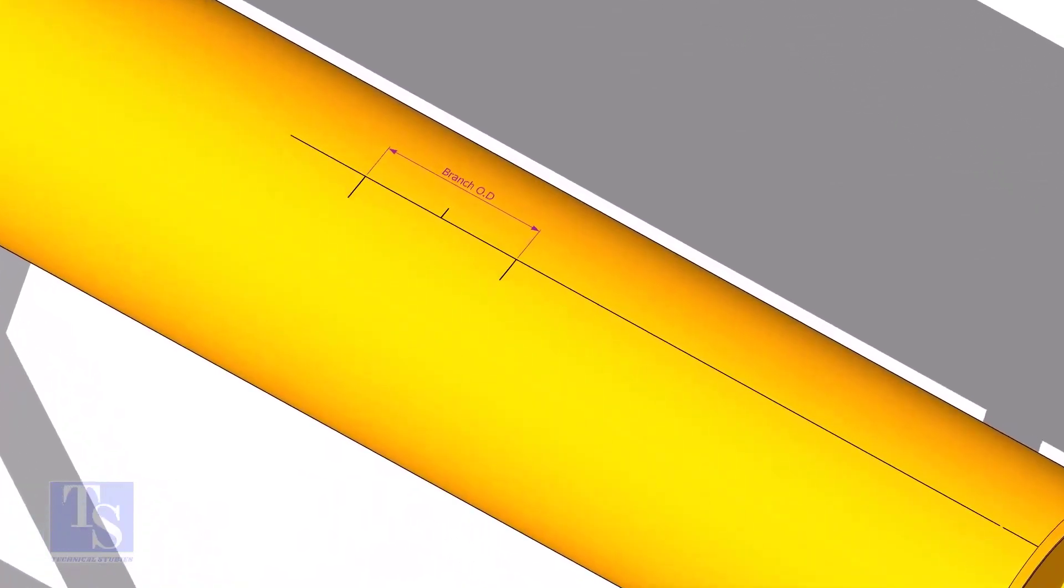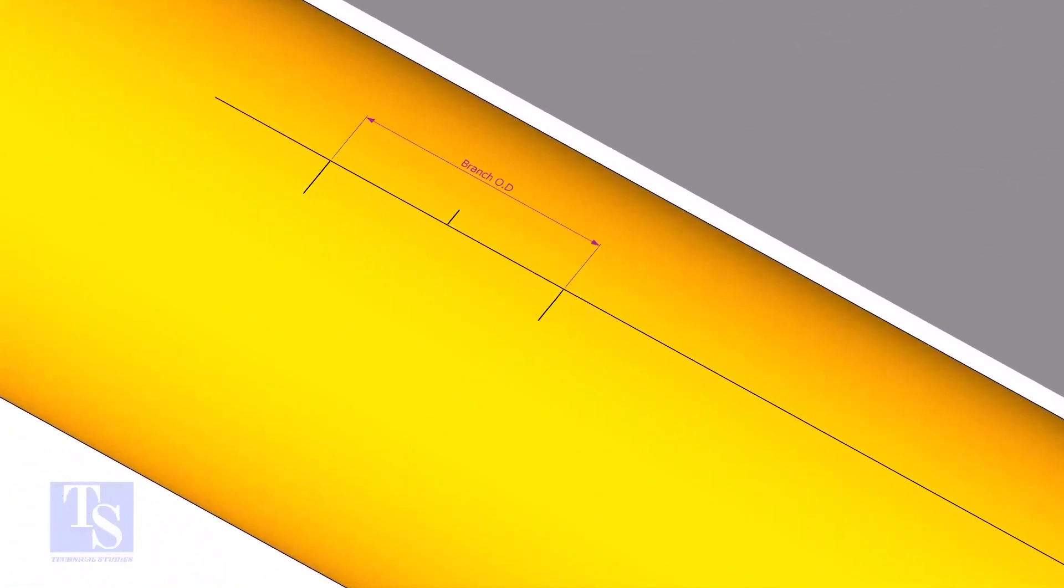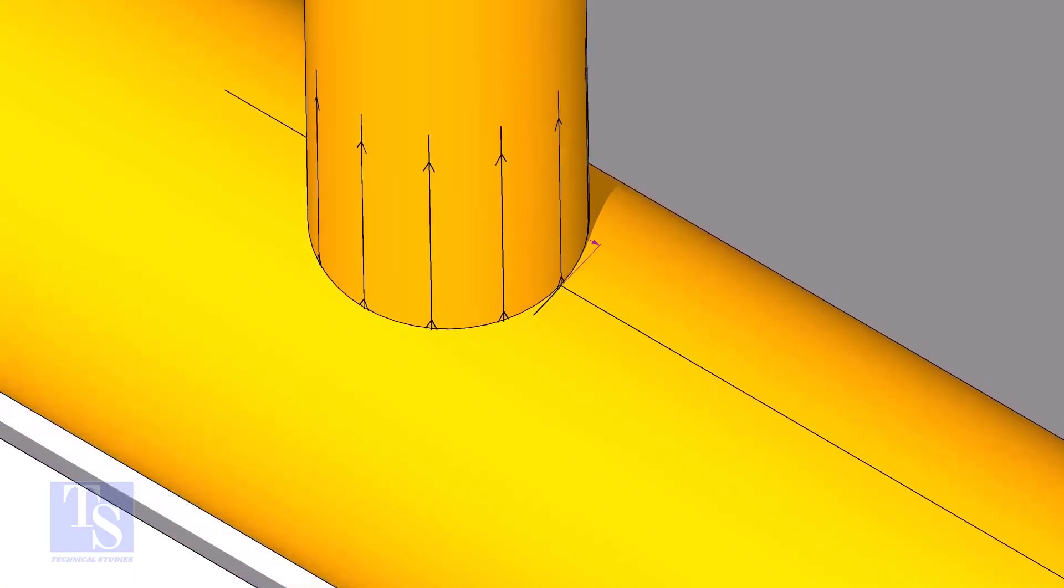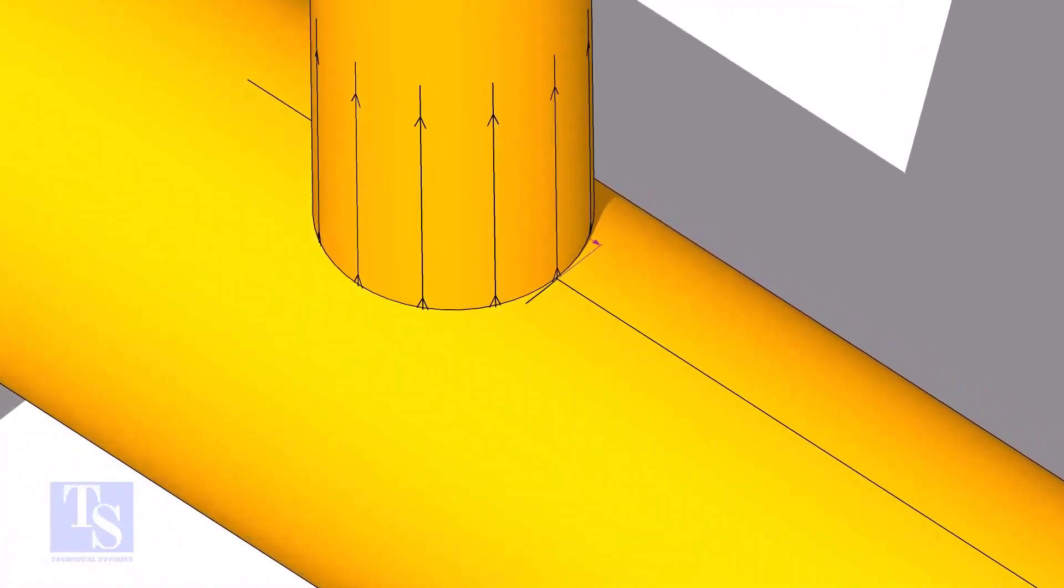Mark the branch OD on the center line of the header. Put the branch exactly on this marking, matching the branch center line.